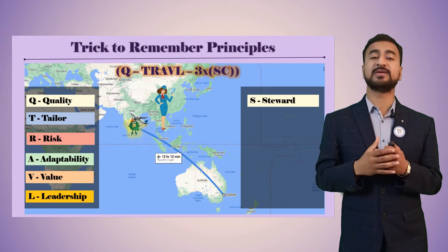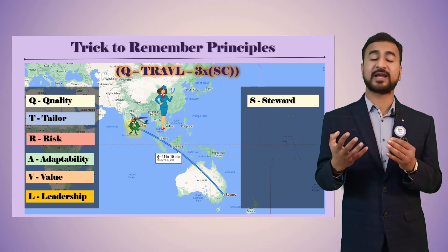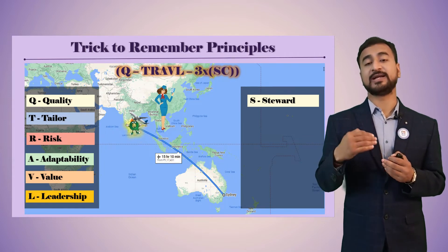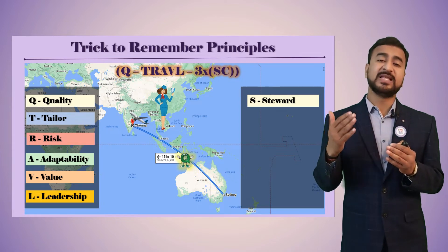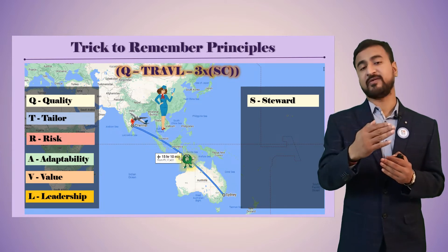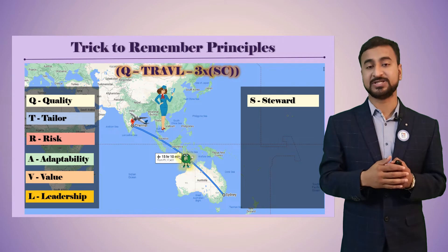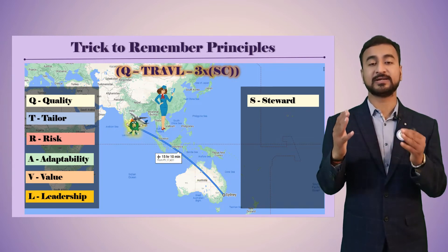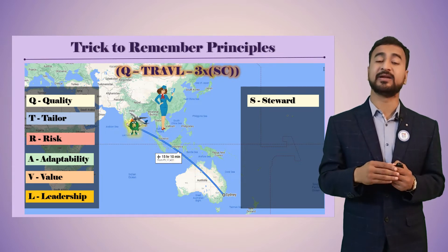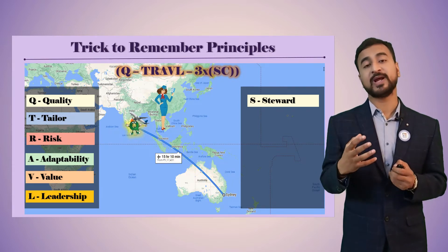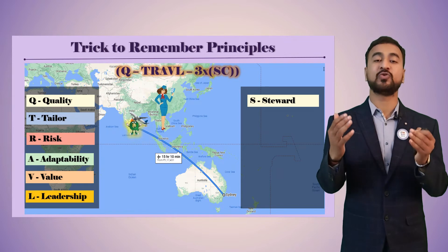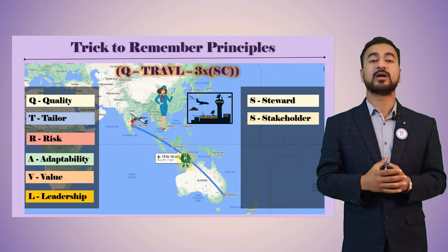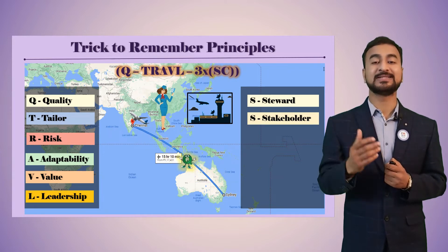The 3S begins with Stewardship. The air hostess on the flight plays the steward role. You can travel without air hostess, but they provide comfort and care throughout the journey. As a project manager, you also need to ensure all team members have that relief and comfort in your presence — that is stewardship.